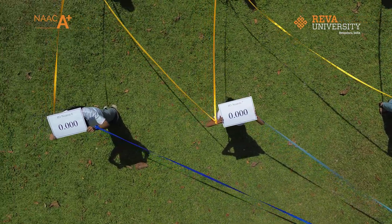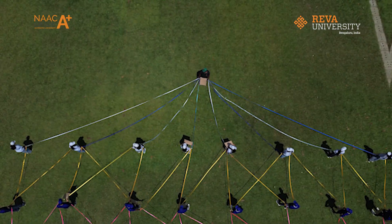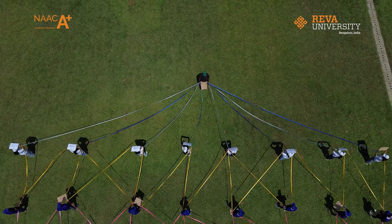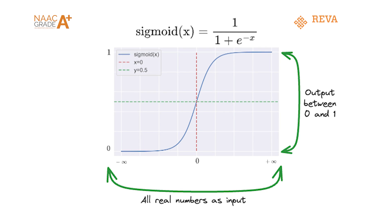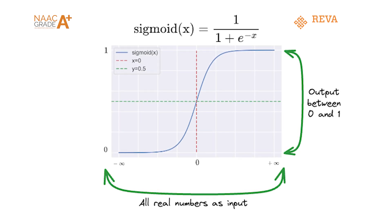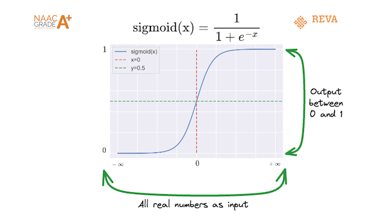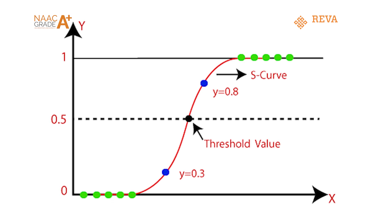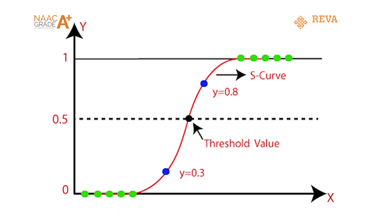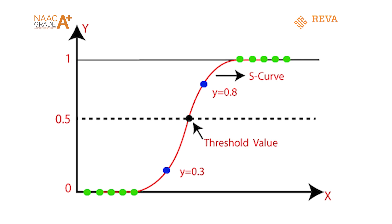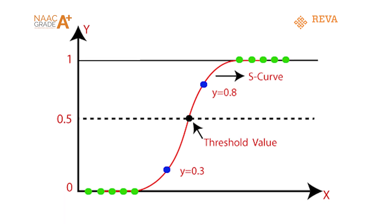As we move from hidden layer 3 to the output layer, we apply the sigmoid function. This function converts the final weighted sum into a probability value between 0 and 1 — like a confidence meter for our prediction. If the probability is above 0.5, we predict hit. If the probability is below 0.5, we predict flop.